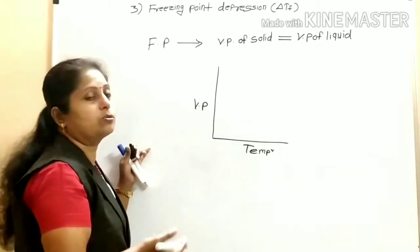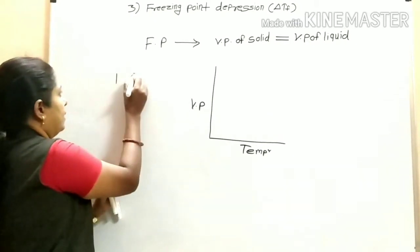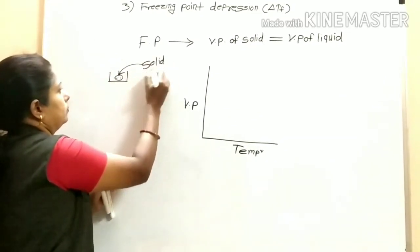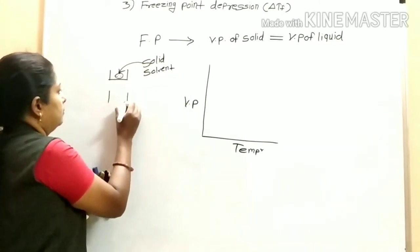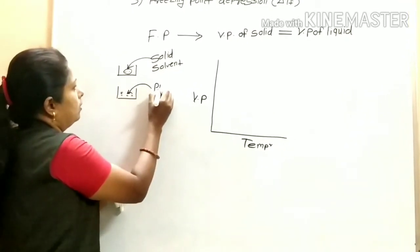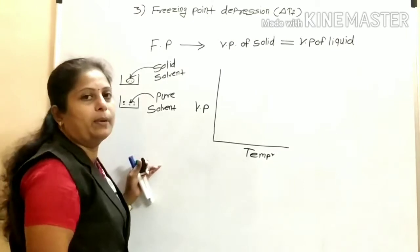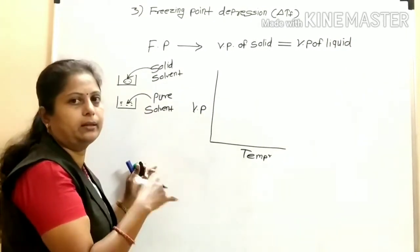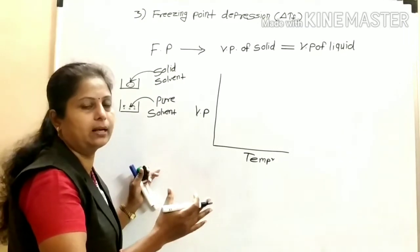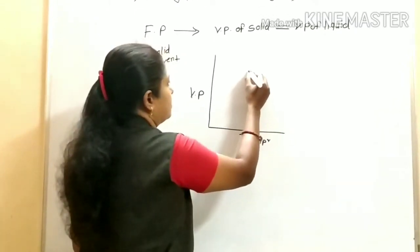Now, on the graph of vapor pressure against temperature, there are three curves. First, we have the solid solvent. We have the solid solvent in one container and the pure solvent in another container.